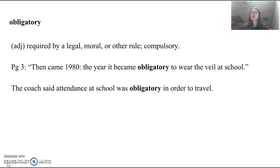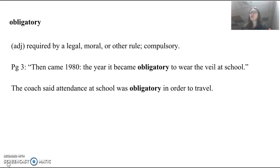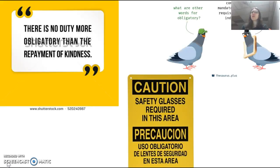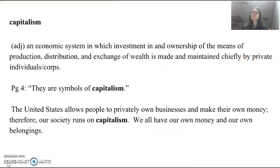Our next word is obligatory. This is an adjective, and it means required — either by legal means, moral means, or some other rule. Compulsory. Before you turn 16, you have a compulsory education; you are required to go to school. This comes from page 3: 'Then came 1980, the year it became obligatory to wear the veil at school.' My example sentence: the coach said attendance at school was obligatory in order to travel. Safety glasses are obligatory in this area. Obligatory — compulsory, necessary, required.